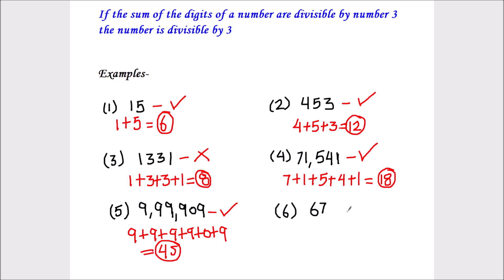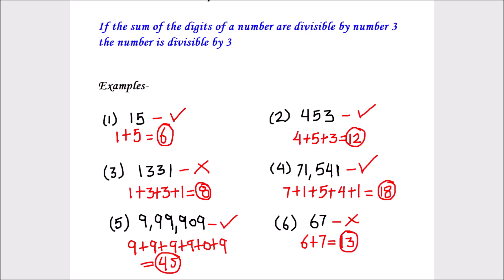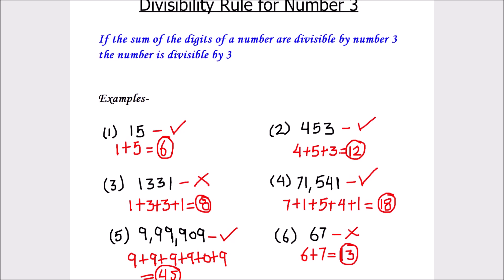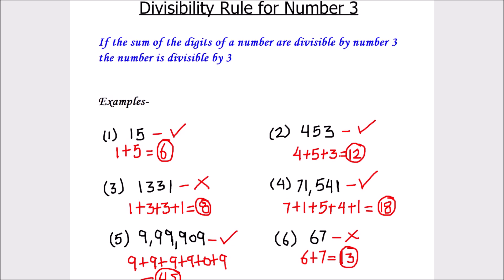Next, the number is 67. The sum of the digits in 67 is 6 plus 7, which is 13. And 13 is not divisible by number 3. So number 67 is not divisible by number 3. We are done with all the examples for the divisibility rule of number 3. This was all about the divisibility rule for number 3.